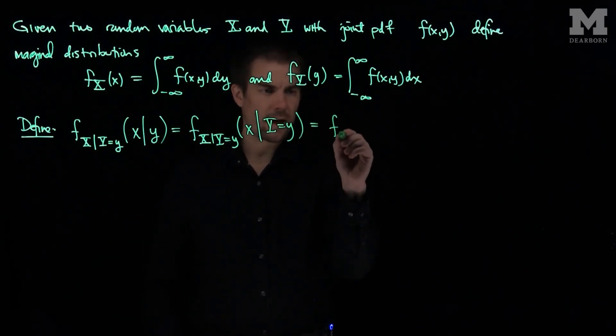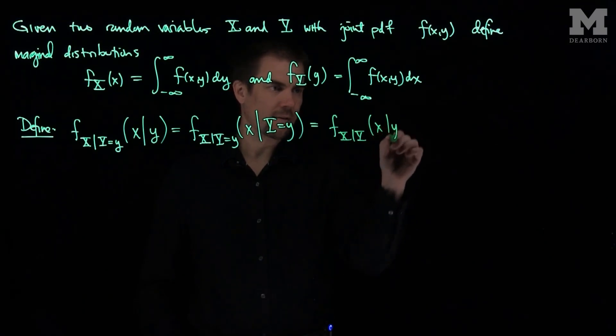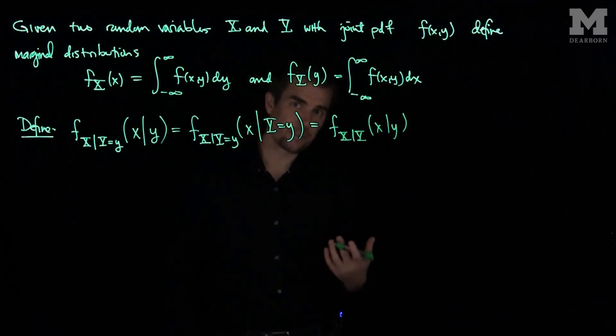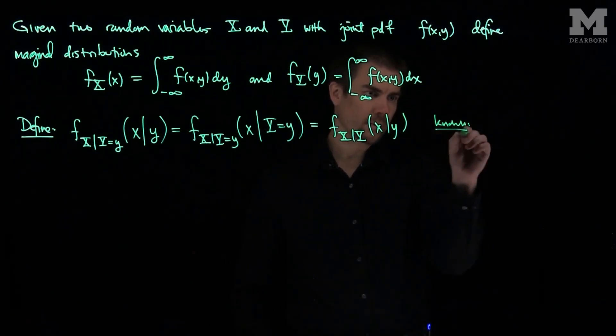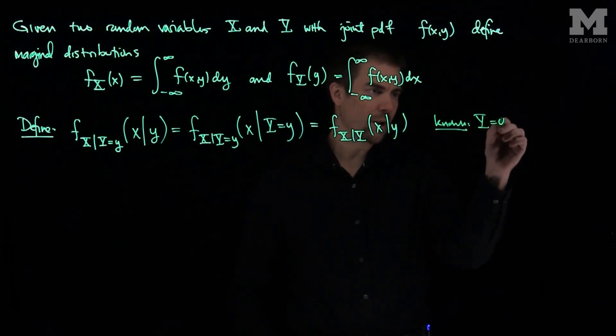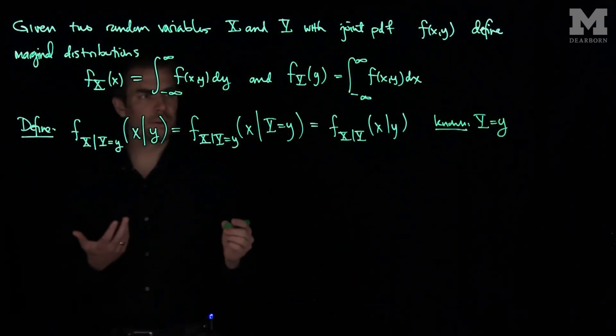Or we can use this notation, f_{X|Y}(x|y). All these things represent the same thing, but what's known to you in each of these expressions? It's known to you that Y is equal to y. That's known. That's fixed. So, how will we define this distribution?